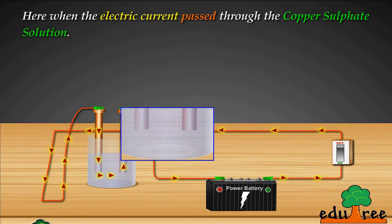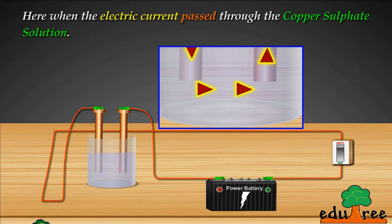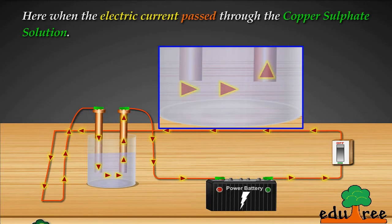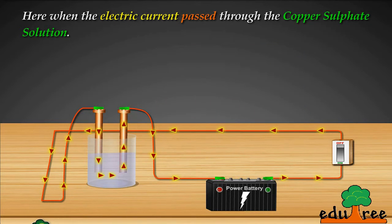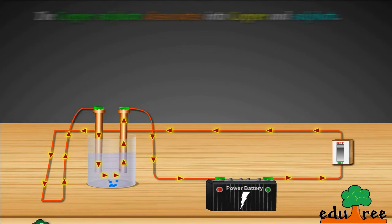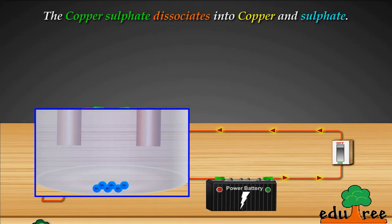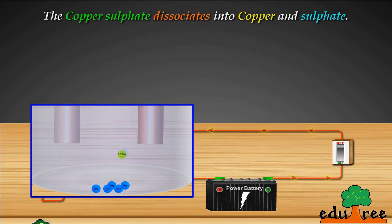Here, when the electric current passes through the copper sulfate solution, the copper sulfate dissociates into copper and sulfate.